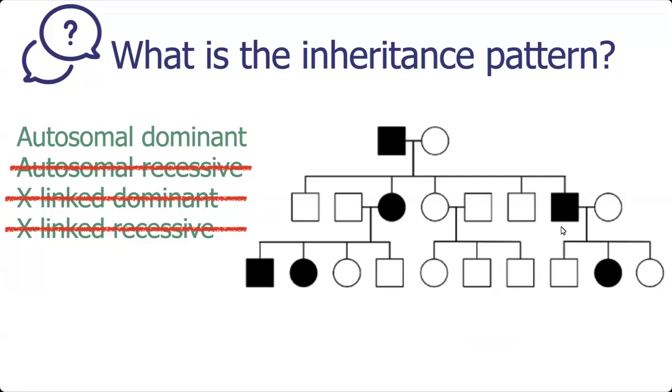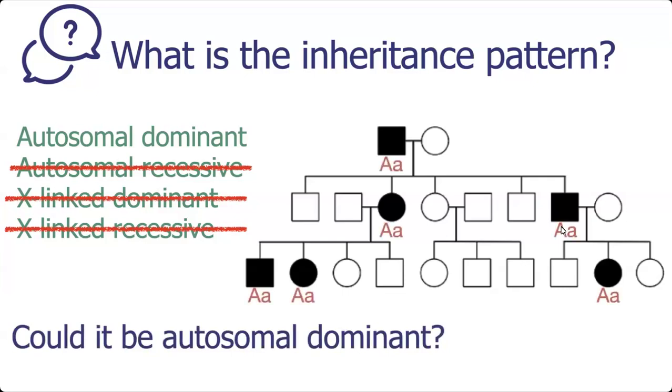We're pretty sure this is autosomal dominant by way of elimination, but let's go through and just check that it all makes sense. All of these individuals would be Aa and we can follow the transmission of the big A through the pedigree, and yes this makes sense. The answer to this pedigree is the inheritance pattern is autosomal dominant.